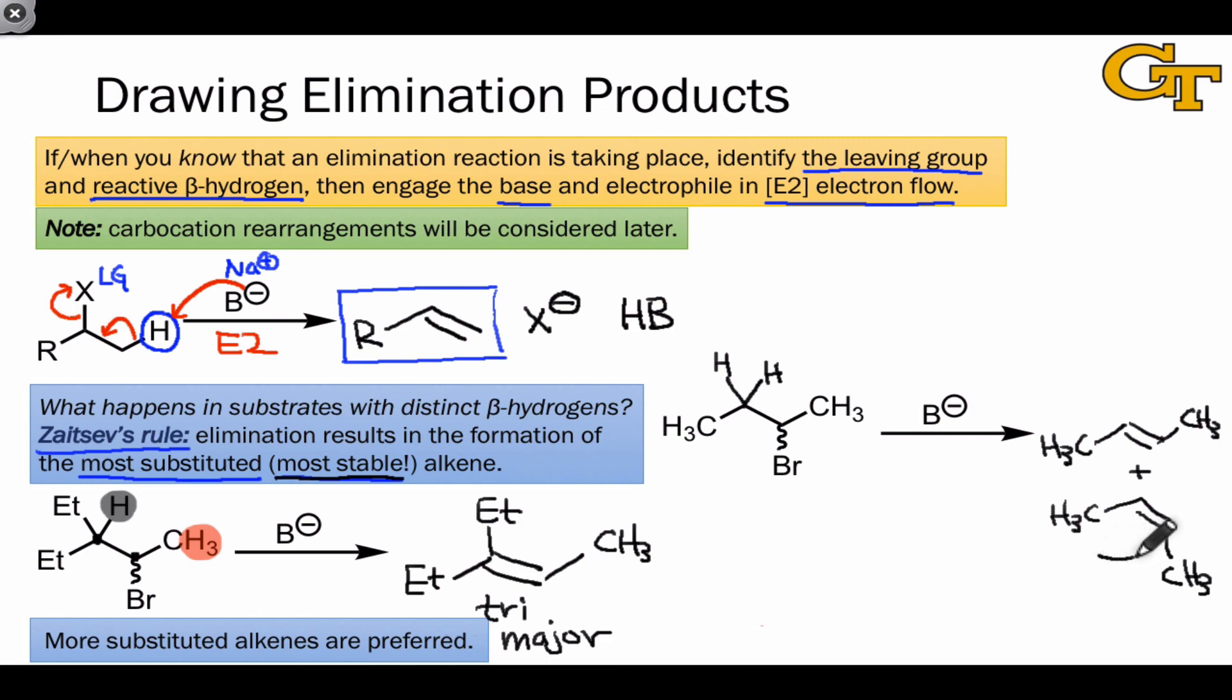And the cis isomer is somewhat less stable than the trans isomer due to steric interactions between these two methyl groups, which are relatively close to each other in the cis isomer, at least relative to the trans isomer, where they're quite far apart. Consequently, we can conclude that the trans isomer is more stable. And following Zaitsev's general rule that elimination produces the most thermodynamically stable alkene, we can conclude that the trans product will be favored in this process. And indeed, if we actually ran this reaction, we would find that the trans isomer dominates heavily over the cis isomer. The trans isomer is the major product.